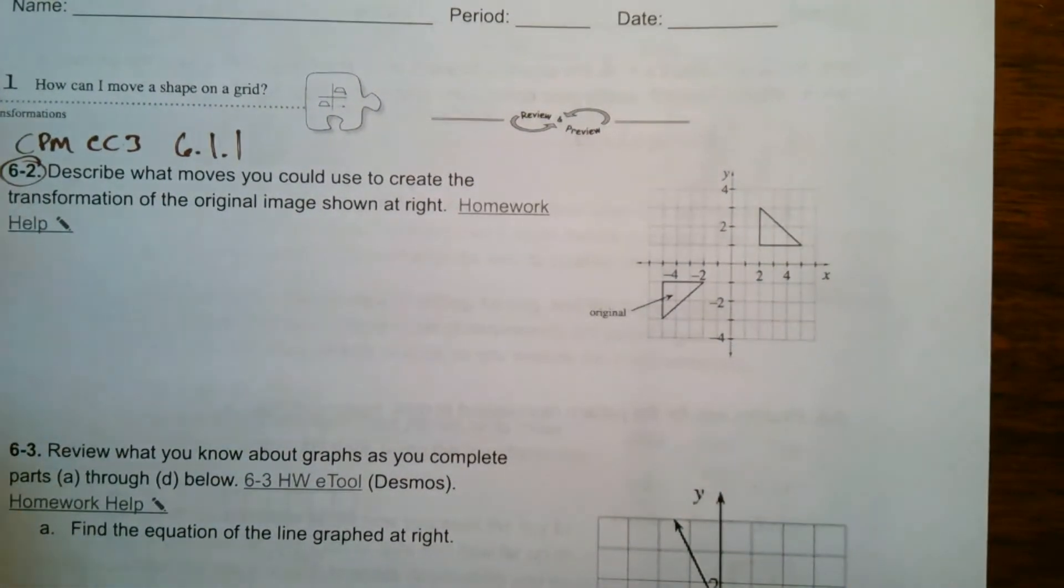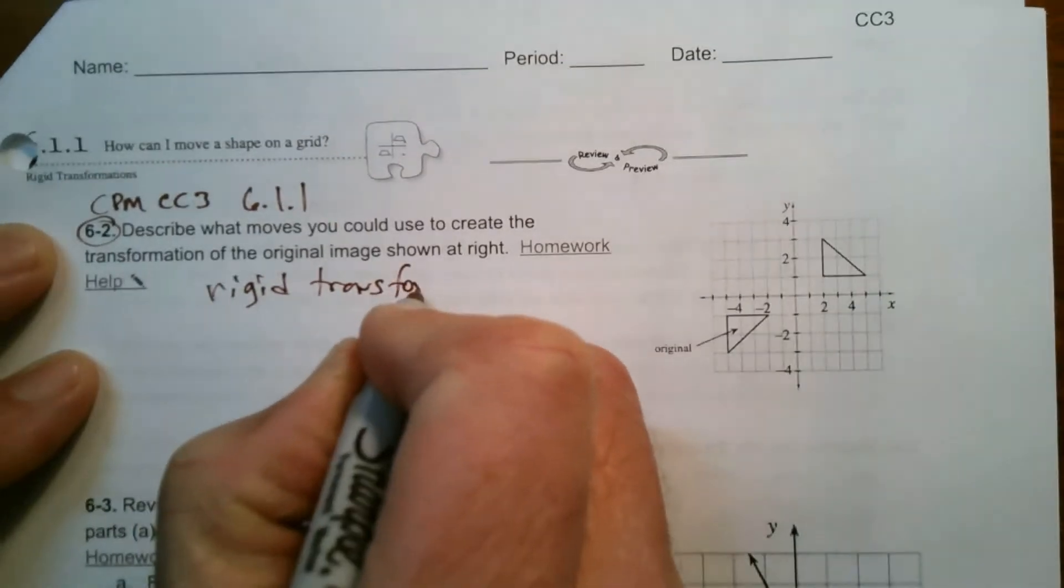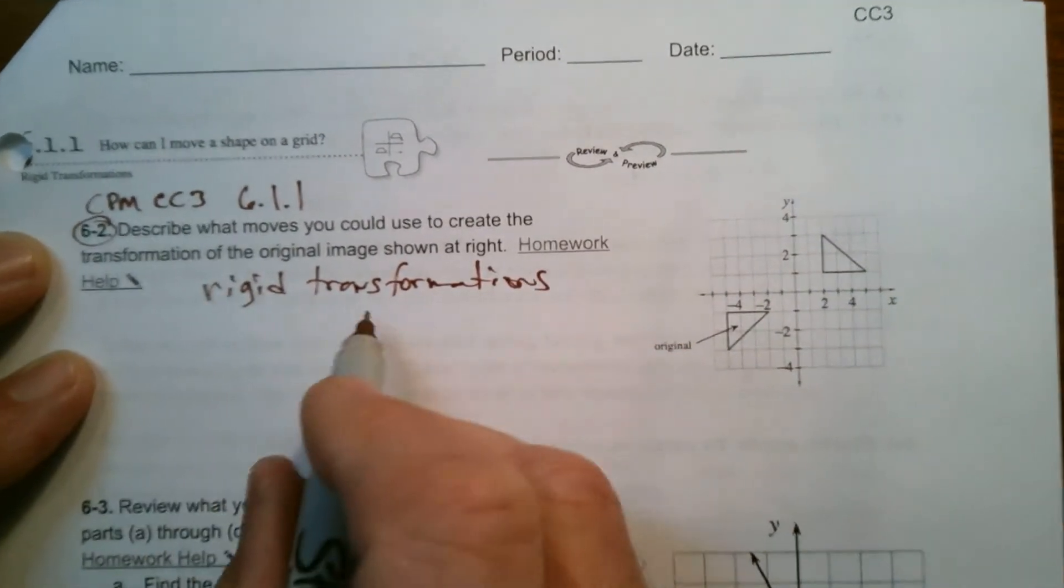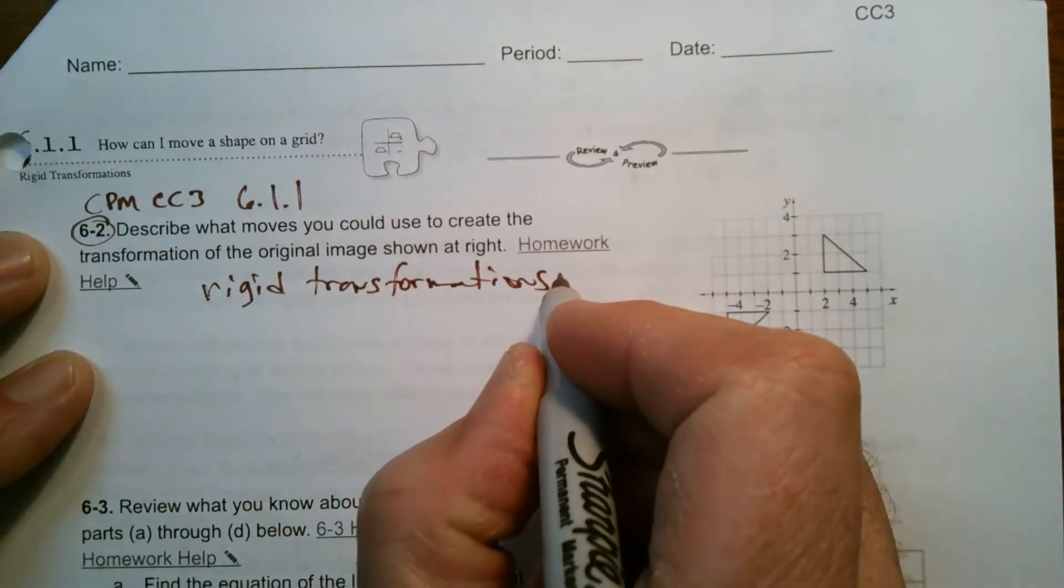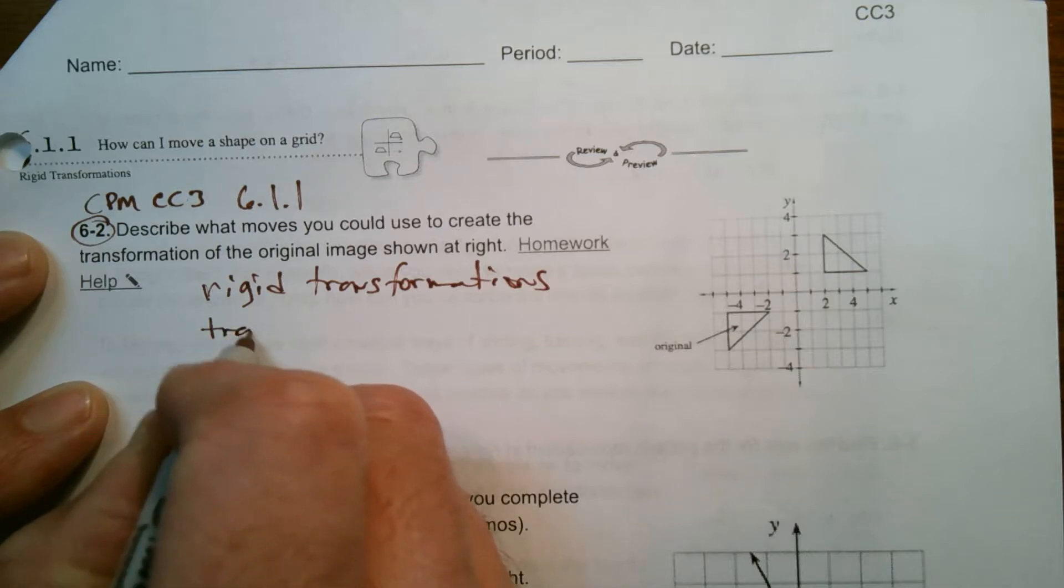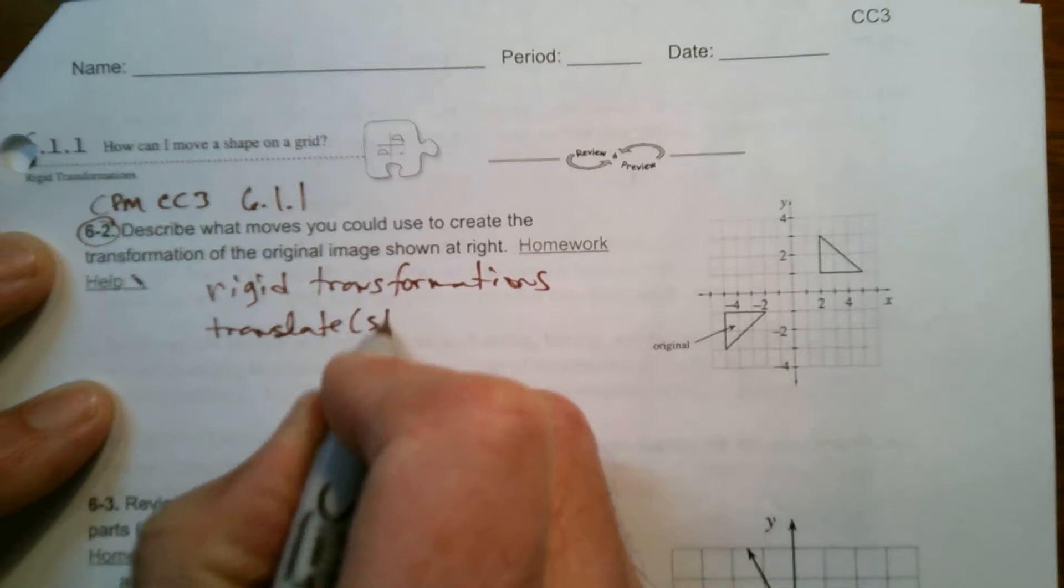So remember we have with rigid transformations, there's three rigid transformations. You have three that we're dealing with right now. We've got translate, and translate is the same thing as slide.